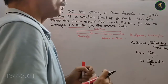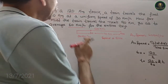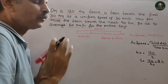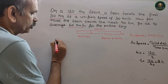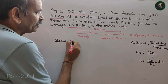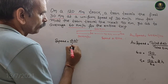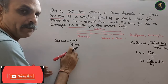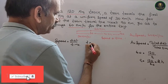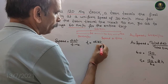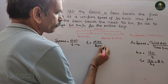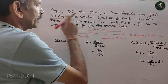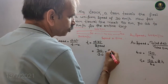Now the first train travels 30 km at 30 km per hour speed. Time equals distance by speed. So for the first part, time T equals 30 divided by 30, that is equal to 1 hour.